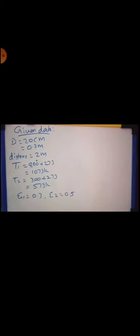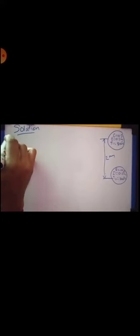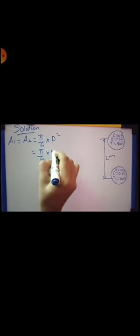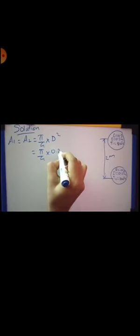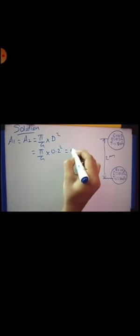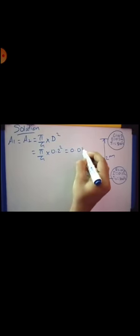Then, to find Q. This is the diagram. Circular disk. A1 is equal to A2 is equal to pi by 4 into D square. This is equal to pi by 4 into diameter 0.2 square. This is equal to 0.0314 meter square.